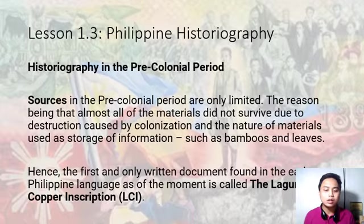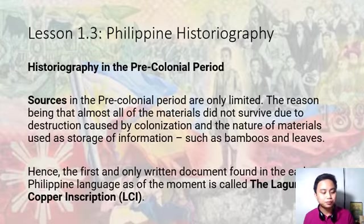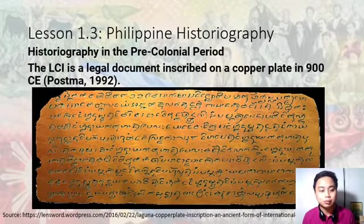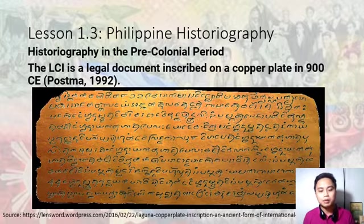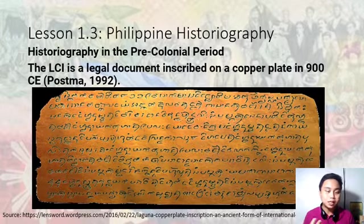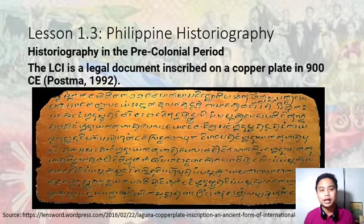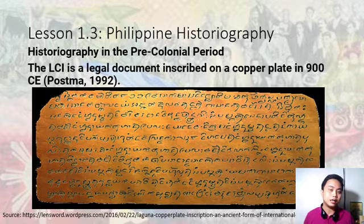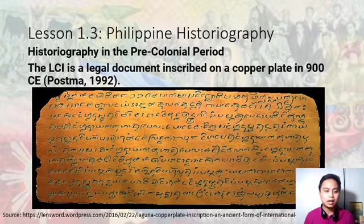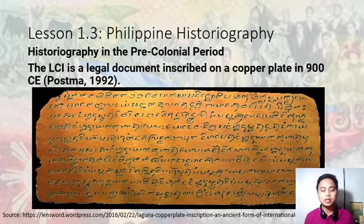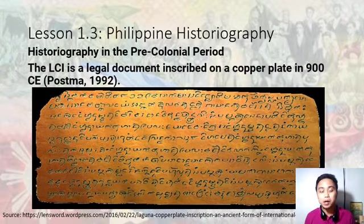Hence, the first and only written document in the early Philippine language, at the moment, is called the Laguna Copper Plate Inscription. The LCI or Laguna Copper Plate Inscription is a legal document inscribed on a copper plate in 900 CE, Common Era. Isa itong tanso — copper — na inukitan ng sinaunang pagsulat natin.